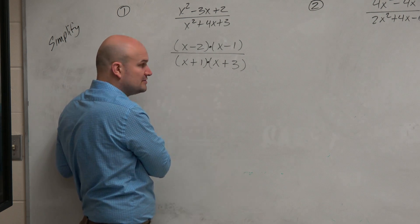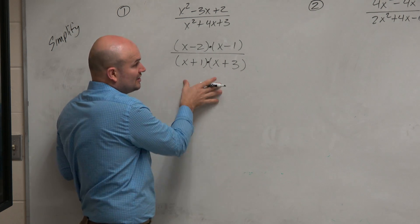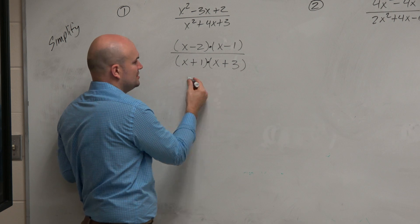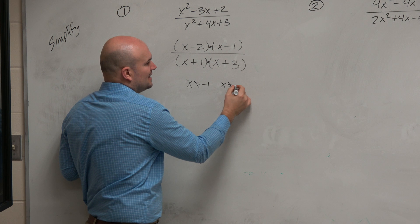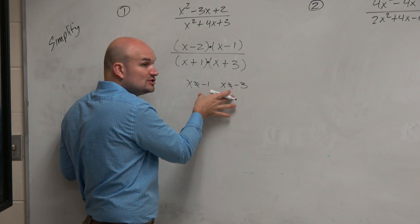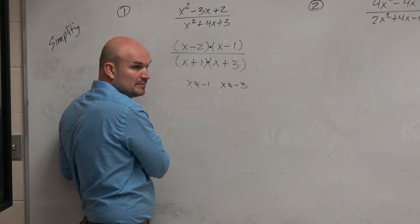However, I can define the values that are not defined for this expression, which would be x cannot equal negative 1 and x cannot equal negative 3, because those are the values that make our denominator equal to zero.